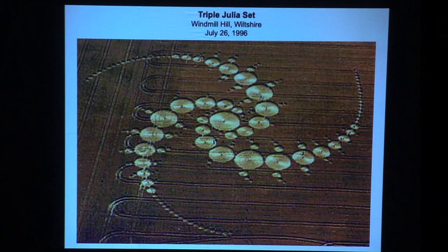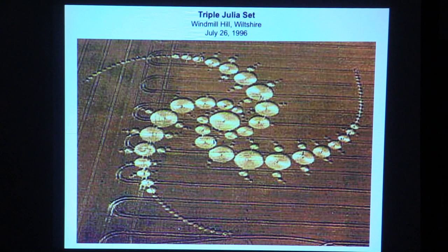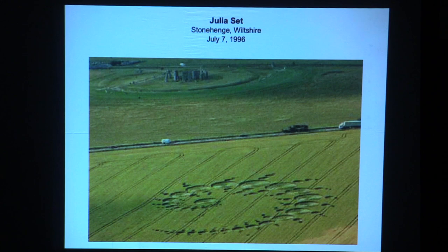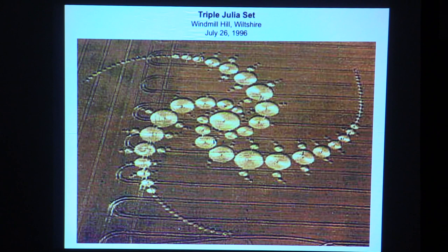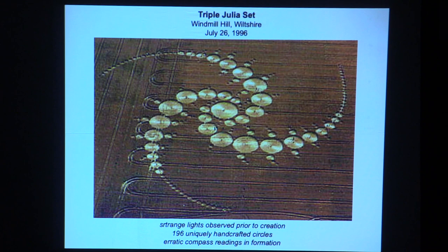And as if that's not impressive enough, the triple Julia set. That's July 7, 1996 — the Julia set. July 26, 1996, nineteen days later — that amazing scope is truly phenomenal. Every one of those circles had a distinct clump of standing plants ornamented in a different way — each one uniquely ornamented, different from the others. Strange lights were observed prior to the creation of this. 196 uniquely handcrafted circles. Erratic compass readings were noticed in the formation.